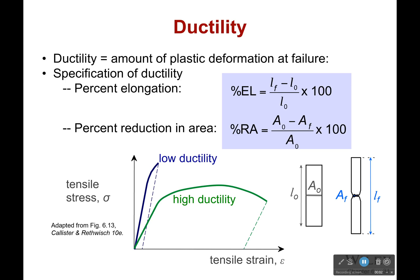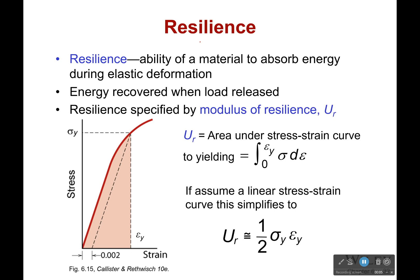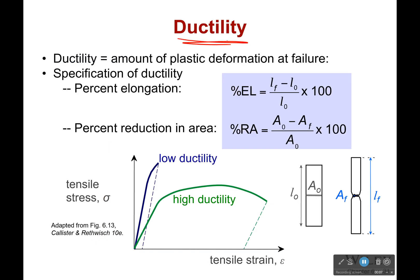Now let's talk about a few more important properties of materials. The first is ductility. Ductility is the amount of plastic deformation at failure — we want to know how much a material can stretch before it fails. Something that fails really early and doesn't stretch much has very low ductility.